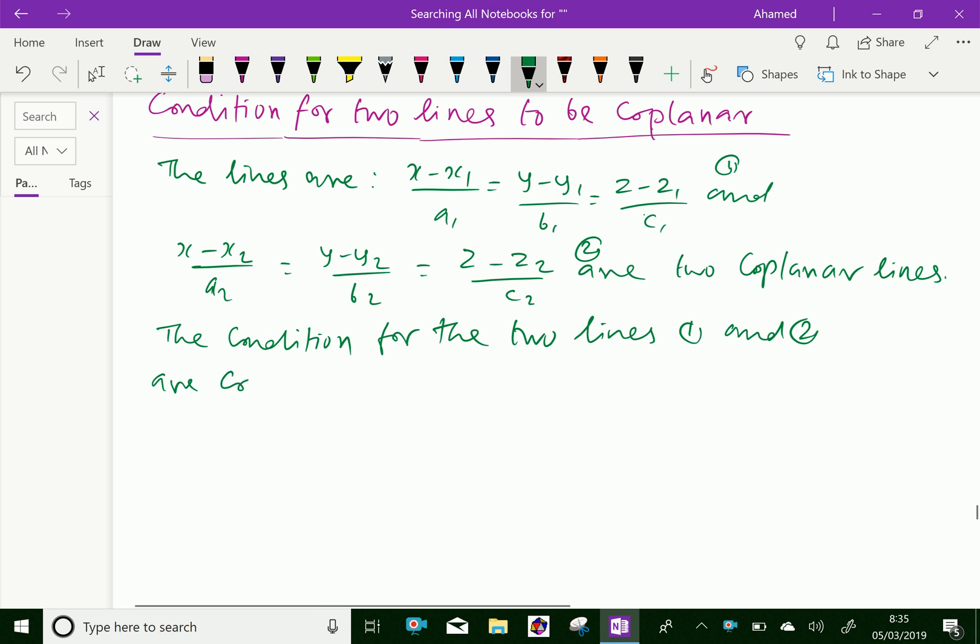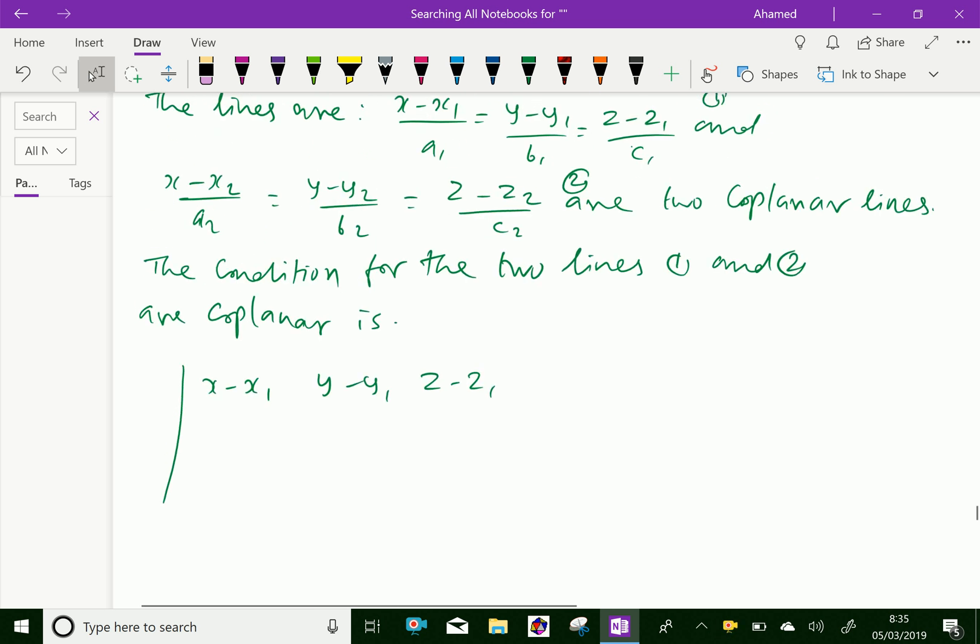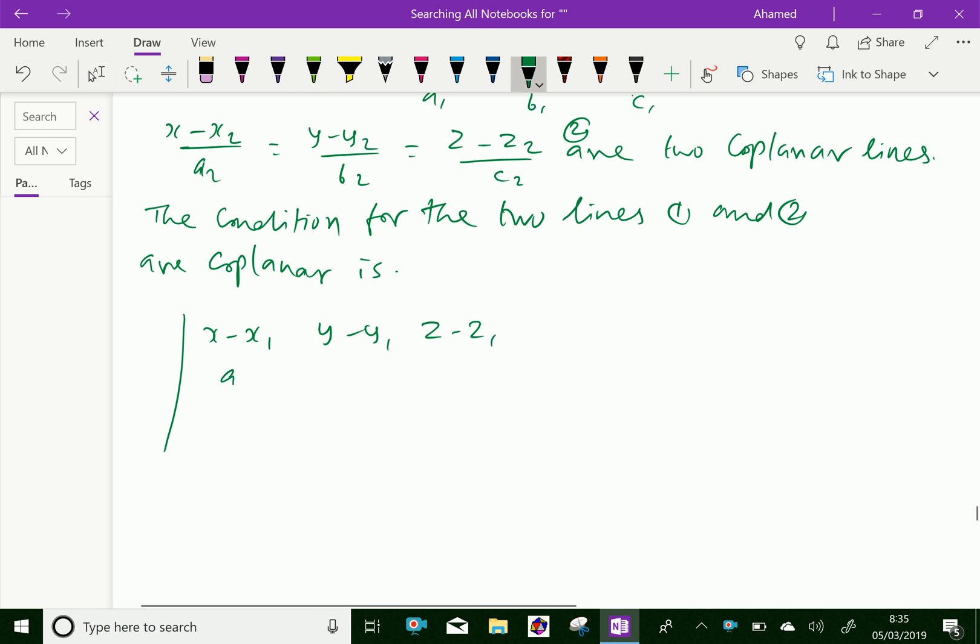The determinant with first row x2 minus x1, y2 minus y1, z2 minus z1, second row with direction ratios a1, b1, c1, and third row a2, b2, c2 equals zero. This is the condition for the two lines to be coplanar.